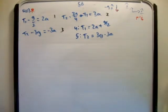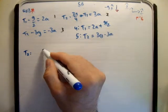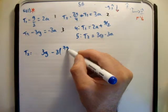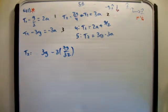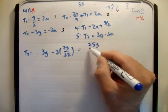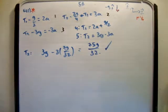And apply the same procedure for tensional force number 2. So we're going to have t2 is equal to 3 times g minus 3 times 7g over 32. So if you do the same procedure there that we did a moment ago, you're just going to get the answer 75g over 32, which is also correct.